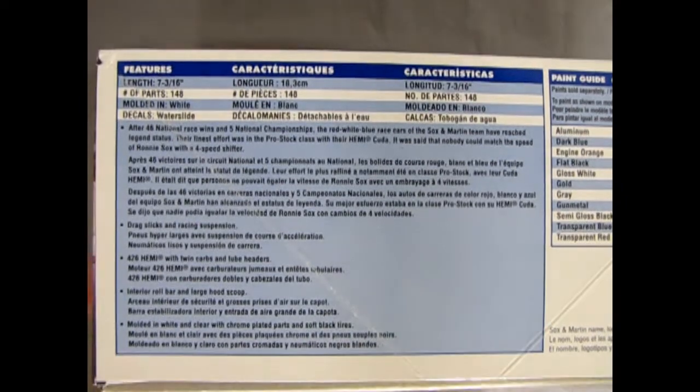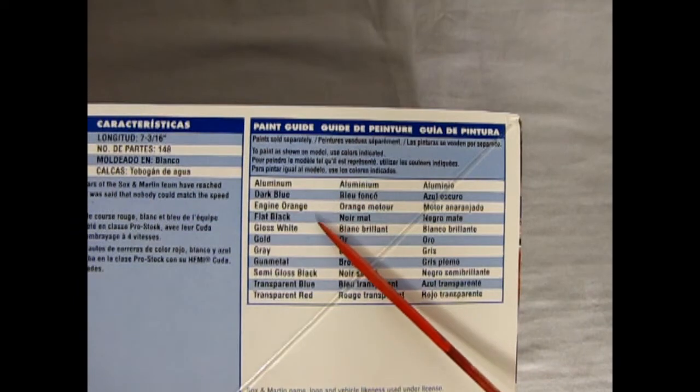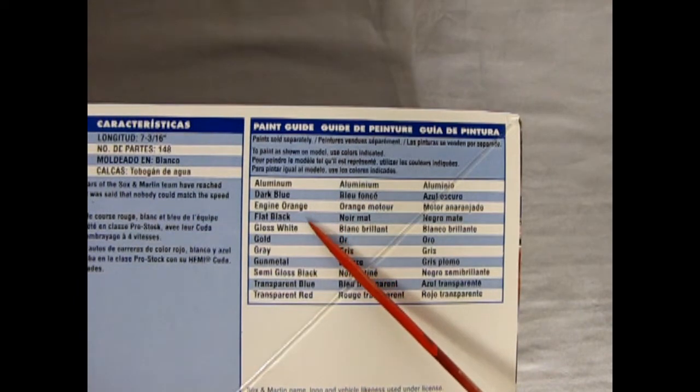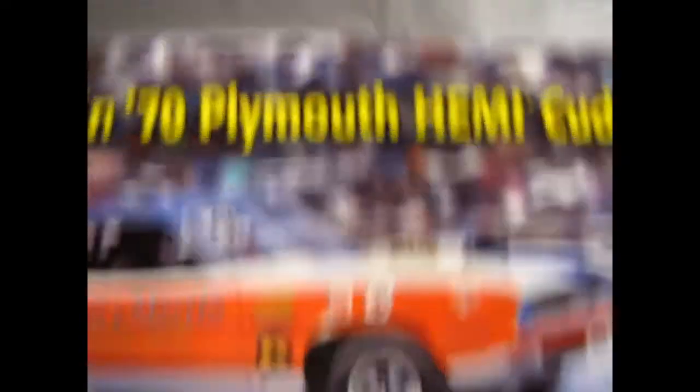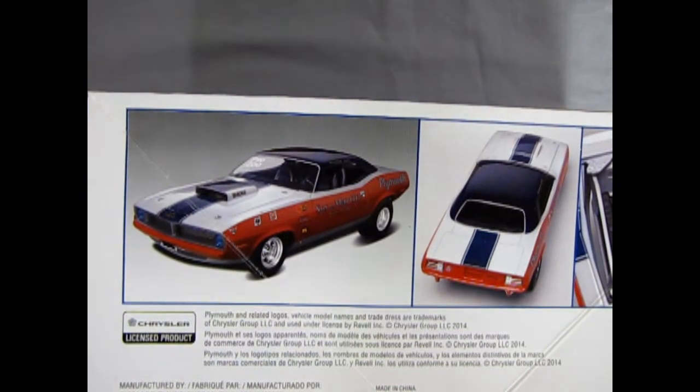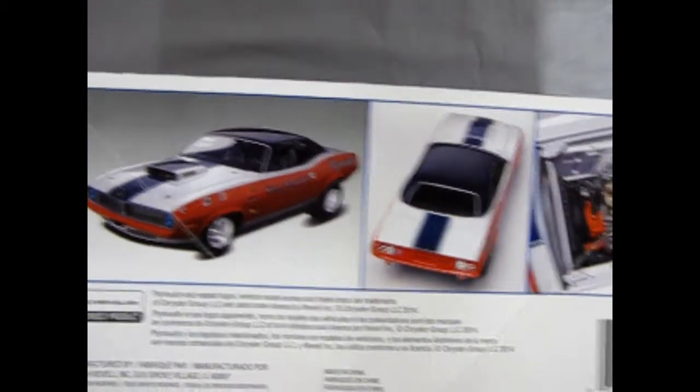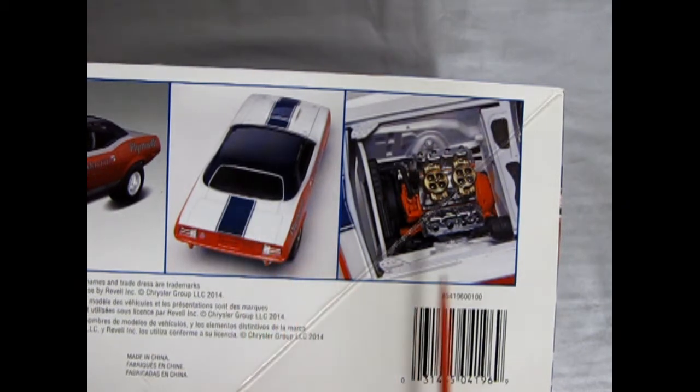Over here it gives us all our paint colors that we need: aluminum, dark blue, engine orange, it should be Hemi engine orange, flat black, gloss white, gold, gray, gun metal, semi-gloss black, transparent blue and transparent red. The end of the box looks like the front of the box, and then here we get some nice photographs - that looks like the real Sock and Martin car - and then in here we have the model kit. There's from the back, the upper top three quarter, and of course the engine.